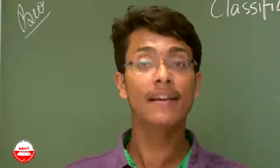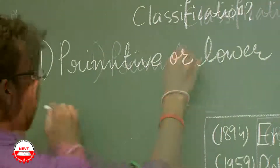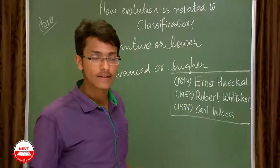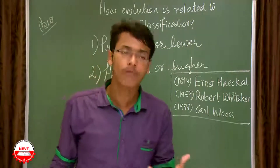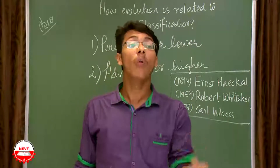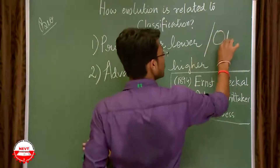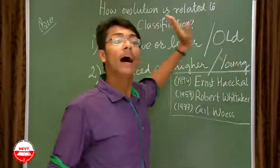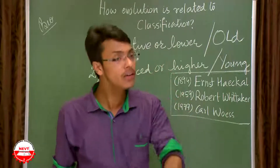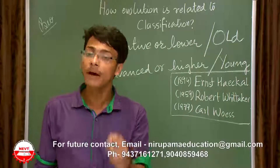On the basis of evolution, animals were categorized into two parts: primitive or lower organisms, and advanced or higher organisms. Though these terms are misleading and erroneous — you cannot label a species as strictly primitive or advanced — the accepted terms are old and young organisms. Older organisms have simpler structures, while younger organisms are much more advanced in their structures.